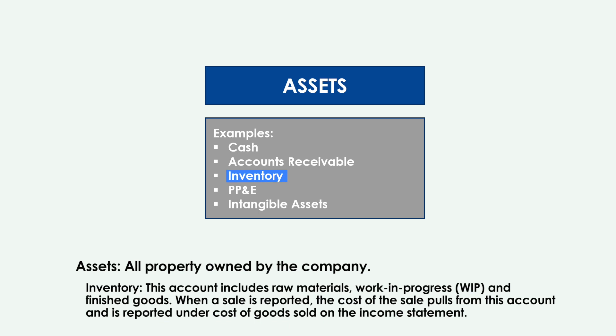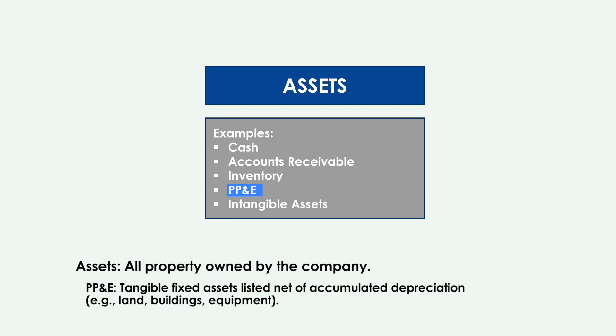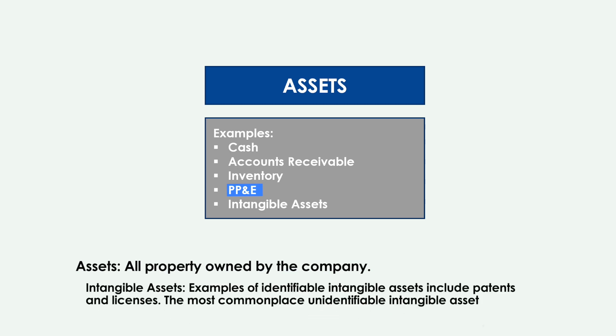When a sale is reported, the cost of the sale pulls from the inventory account and is reported under cost of goods sold on the income statement. Then property, plant, and equipment, or PP&E — these are the tangible fixed assets listed net of accumulated depreciation. Examples include land, buildings, and equipment. And finally, intangible assets. Examples of identifiable intangible assets include patents and licenses. The most commonplace unidentifiable intangible asset is goodwill, and we will have more on this topic in future lessons.